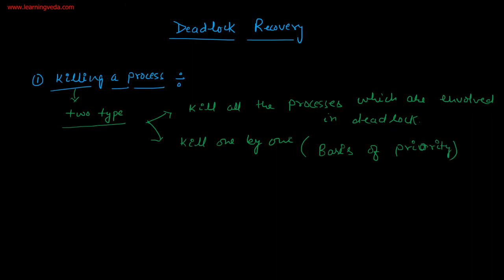Let's say there are many processes involved in deadlock. Try to kill that process first which has the least priority. If you are killing a low-priority process, there is not much effect on your system. So start killing those processes which have the least priority first. The lowest priority process will go for killing first. The basis is priority.